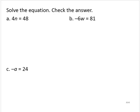So we see that the variable term 4n is by itself, and so we only need to isolate the variable. Right now it's being multiplied by 4, so we will divide by 4 both sides of the equation.